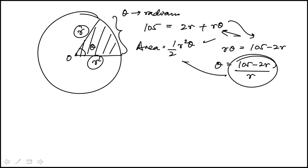So that's theta. I'm going to replace that here. So now I have area as a function of radius, because I need to find the value of r that would maximize the area.